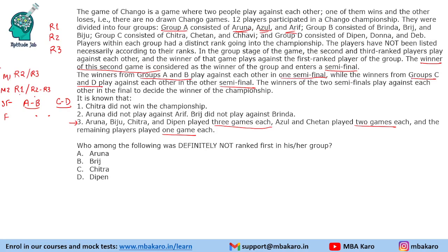If a person loses in match 1, they play only 1 game. If they win match 1 but lose match 2, they play 2 games. If they win match 1 and match 2 but lose in the semi-final, they play 3 games. If they win all three and go to the final, they play 4 games — but no one is given as playing 4 games. For rank 1 players who start at match 2: losing match 2 means 1 game, winning match 2 but losing the semi-final means 2 games.